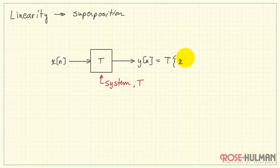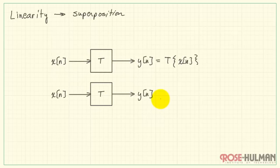The output is the result of system T operating on the input x of n. That's captured by this notation. T operates on x to produce y. Now let me take the system T and I'm going to replicate that in such a way that we can have two different inputs. x1 produces y1, x2 produces y2.